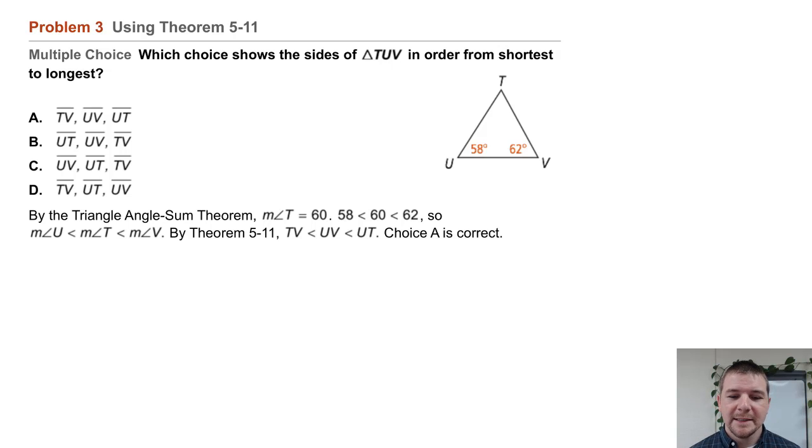By Theorem 5-11, TV is less than UV, which is less than UT. Therefore, choice A is correct.